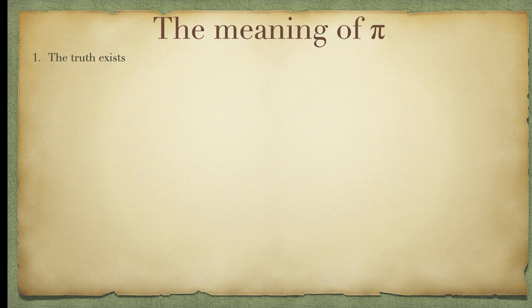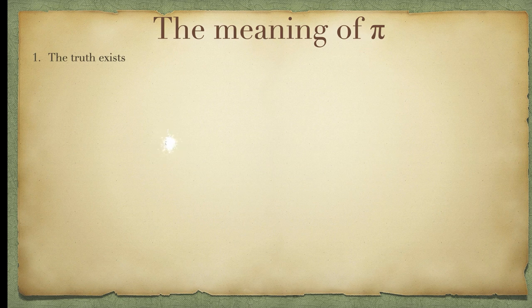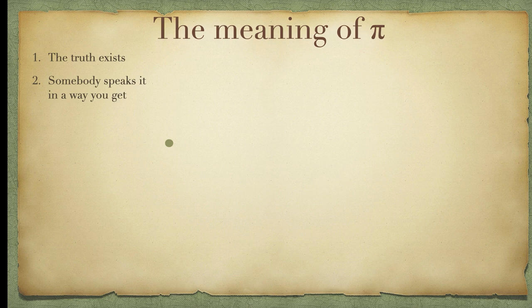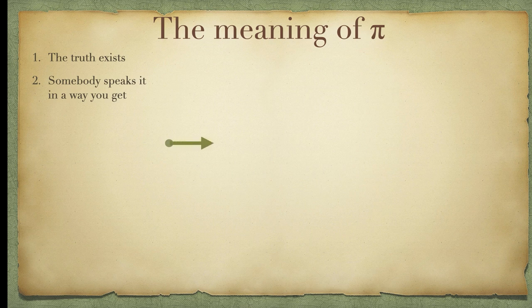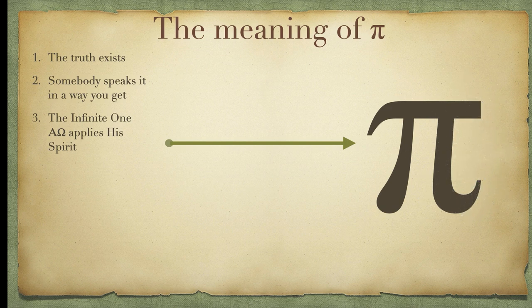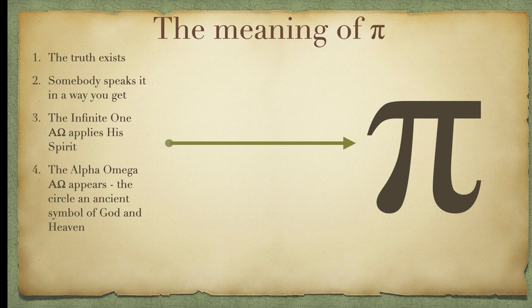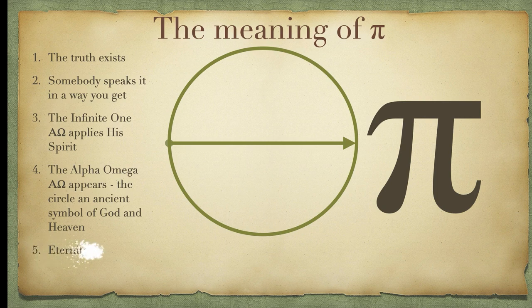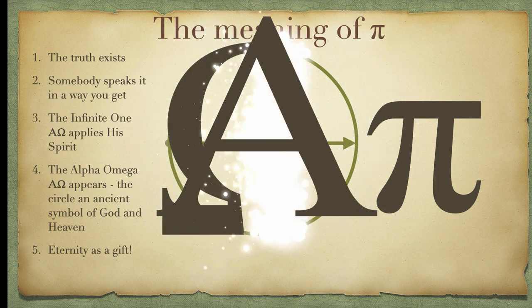All right. Let's think some more about this. The truth exists. That's a proposition that I accept. And it's why I search and seek. Somebody speaks it in a way you get it. Some guru, some magician, some mentor speaks the truth. And you get it. They speak the truth. The infinite one applies his spirit to your understanding. That's Pi. The Alpha and Omega appears. The circle is an ancient symbol of God and heaven, as the square is a symbol for earth. And so, eternity as a gift.